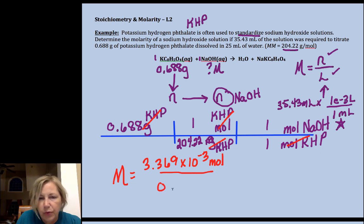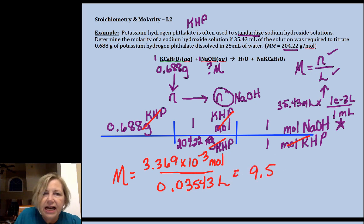Divided by our 0.03543 liters, and I get 9.5. Let's take this out another sig fig. I don't remember what that other digit is. I glanced up here, and this does not dictate our significant figure. This has three sig figs, this has four sig figs.